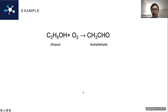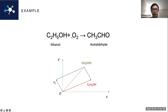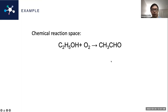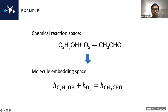For example, given the reaction of alcohol oxidation, we hope this equation holds in the molecule embedding space: the embedding of ethanol plus the embedding of oxygen equals the embedding of acetaldehyde. This means we preserve the chemical equivalence equation from the chemical reaction space into the molecule embedding space.